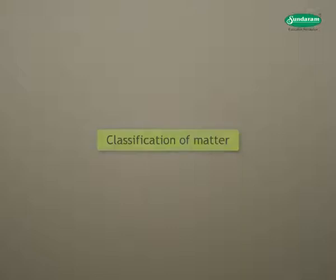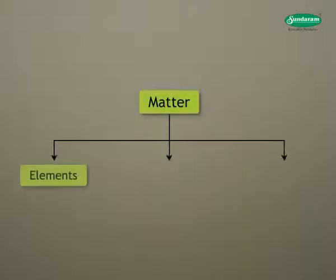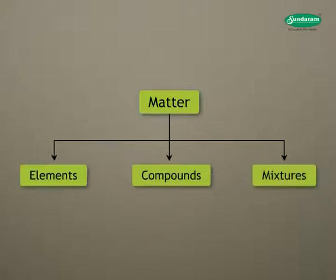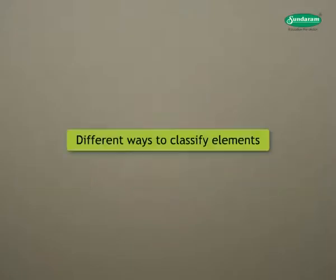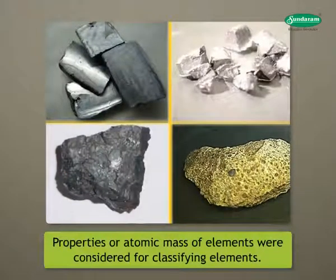You all know that matter can exist in the form of elements, compounds and mixtures. When elements were discovered, scientists adopted different ways to classify elements. Properties or atomic mass of elements were considered for classifying elements.